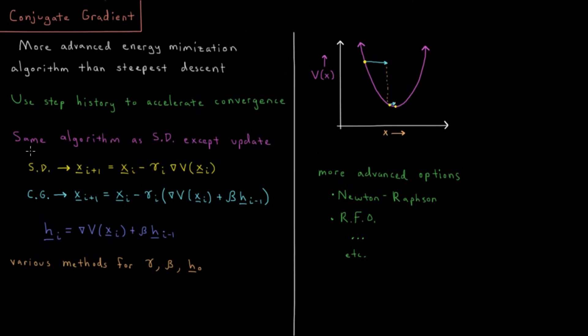Conjugate gradient is basically the same type of algorithm as steepest descent except in the step where you update the coordinates. In steepest descent, the next iteration's coordinates XI+1 equals the current iteration's coordinates XI minus a value gamma times the gradient of our potential energy function.